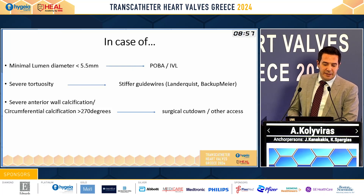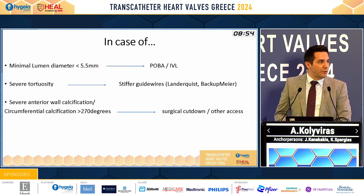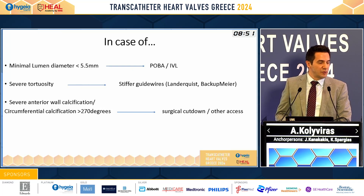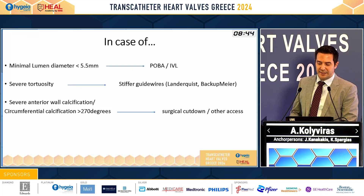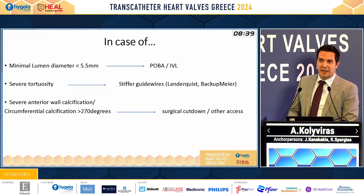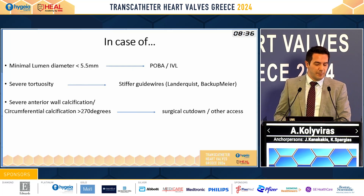In case of a small diameter less than 5 millimeters, we can proceed for a pre-close or a balloon angioplasty, or to use intravascular lithotripsy. If we have a severe tortuosity, we can handle this problem with stiffer guide wires, like Landerquist or a back-up wire.